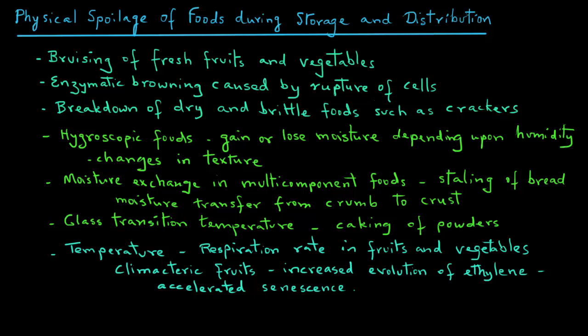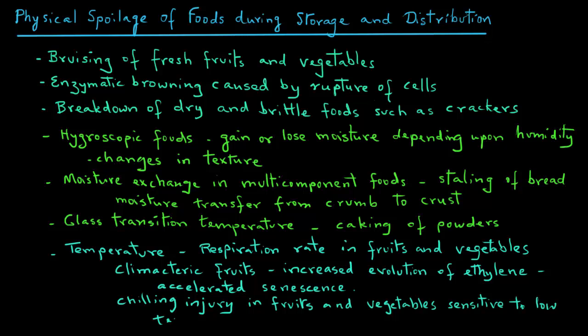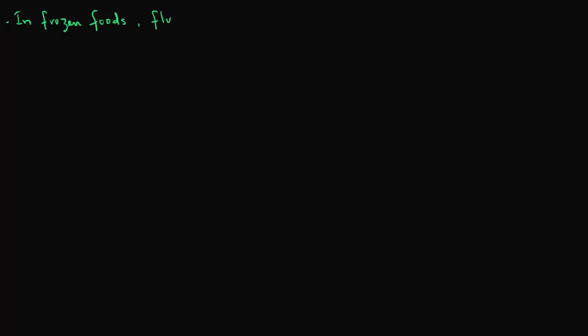Lower temperatures in the range of 5 to 15 degrees Celsius can also be harmful to certain fruits and vegetables. For example, bell peppers are sensitive to chilling injury. Chilling injury causes water soaking, pitting, discoloration, and development of off-flavors.